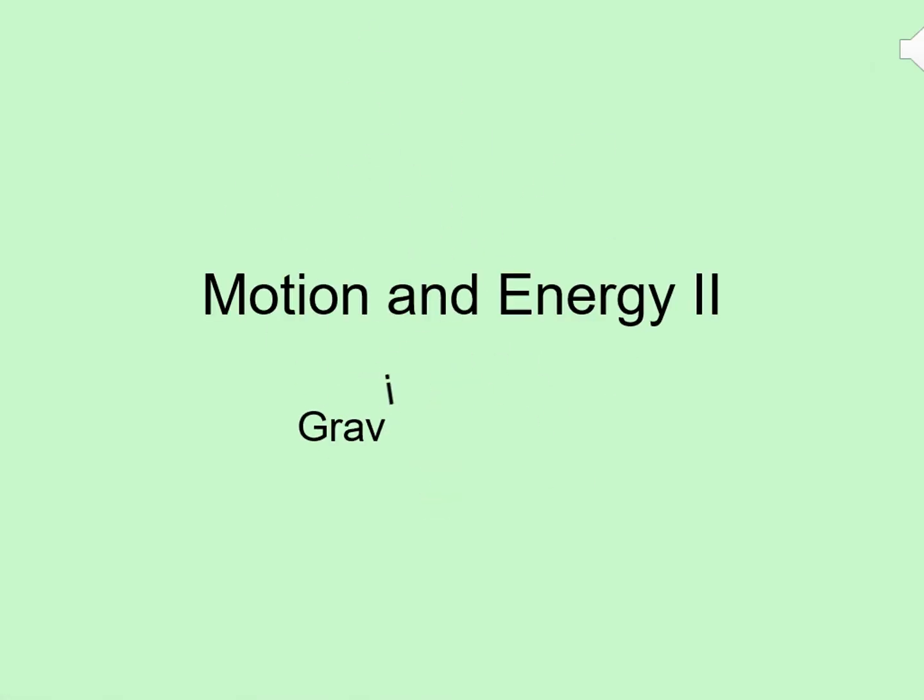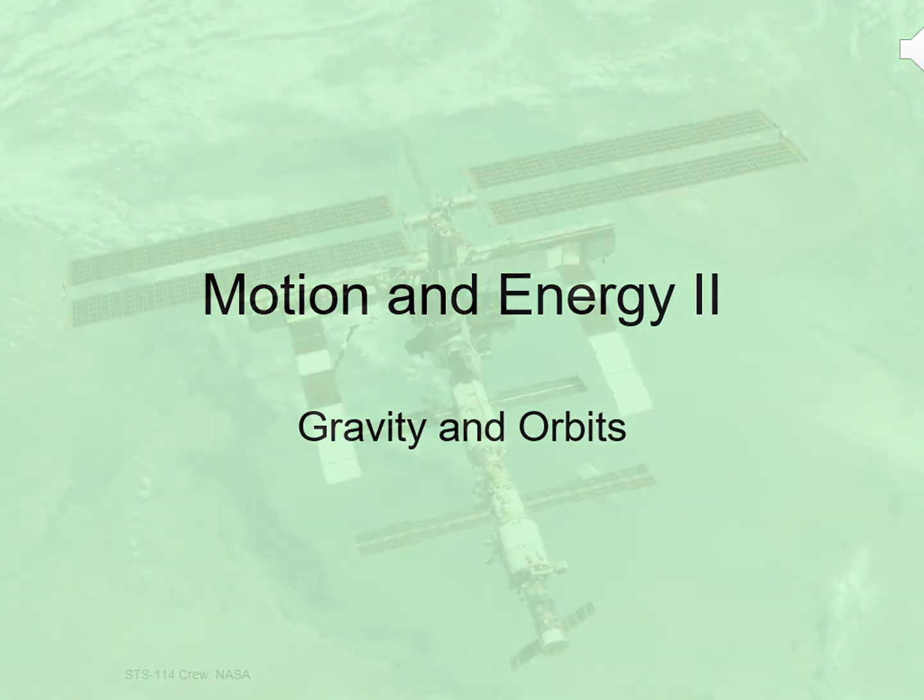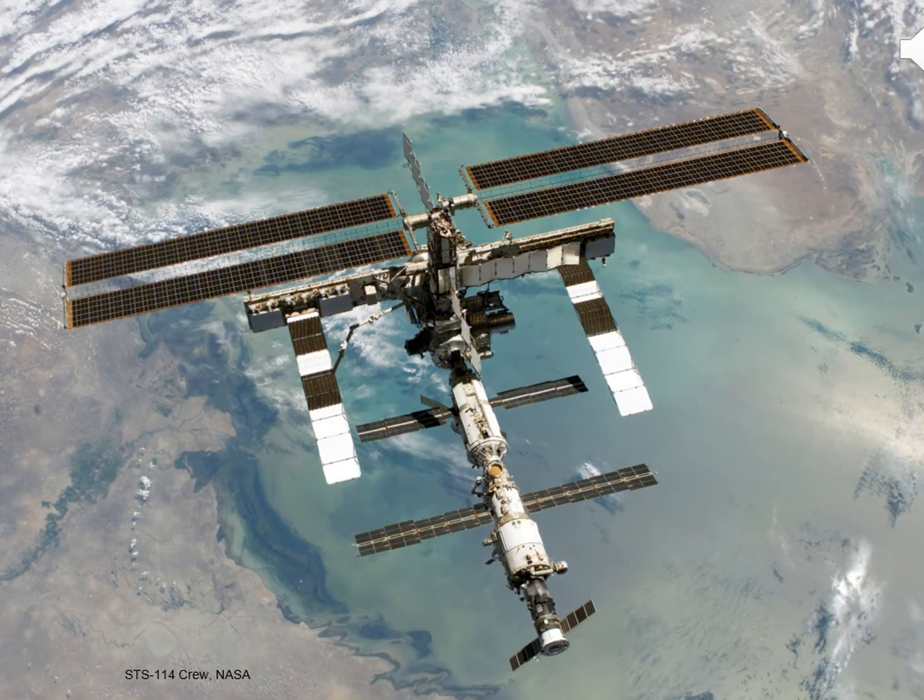Now we're going to see how the laws of motion and energy apply to gravity in orbits. A good way to think about what we'll be doing here is to look at this picture. This is the International Space Station in orbit around the Earth.